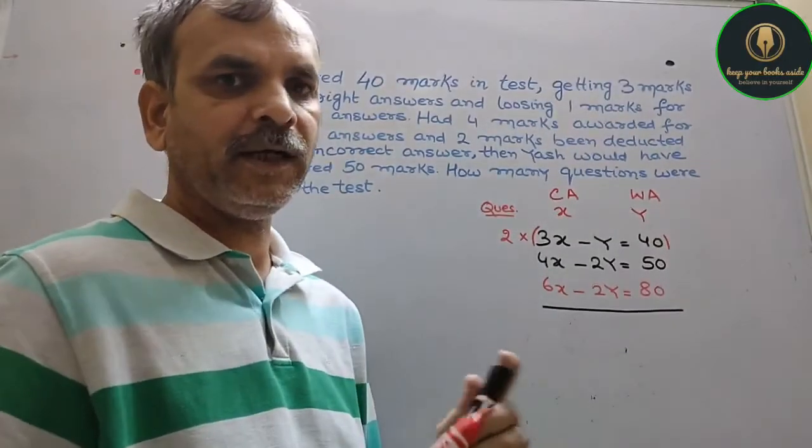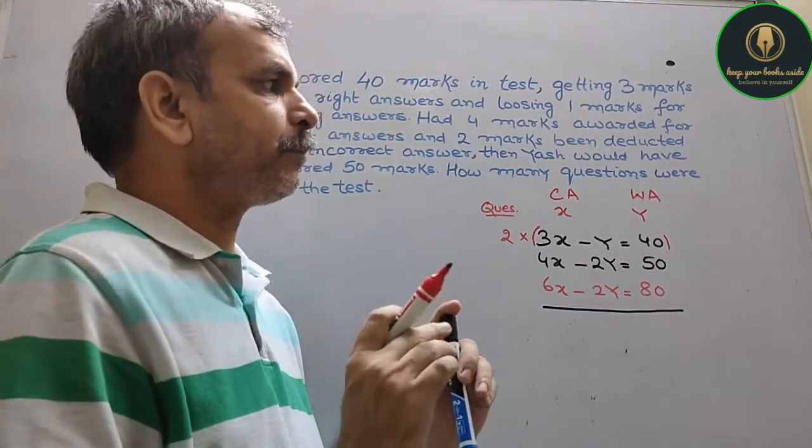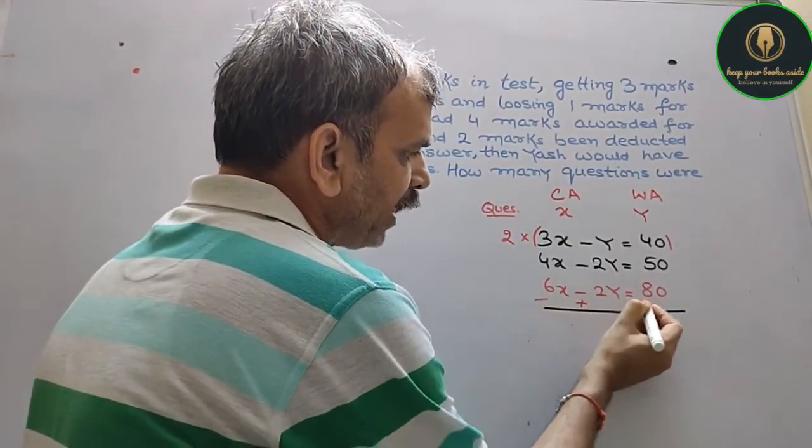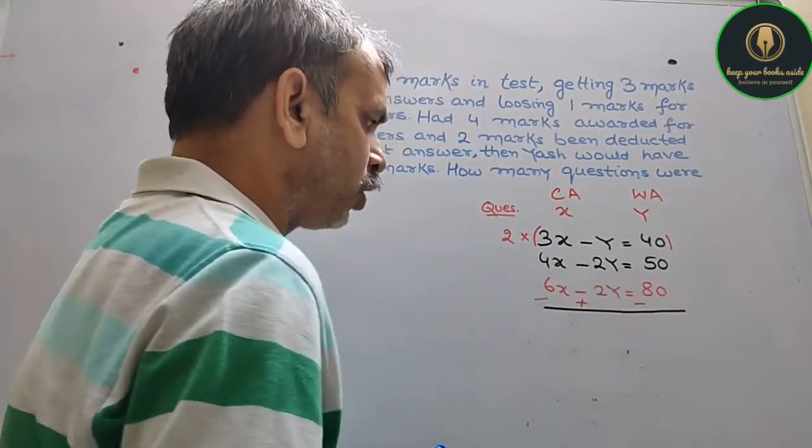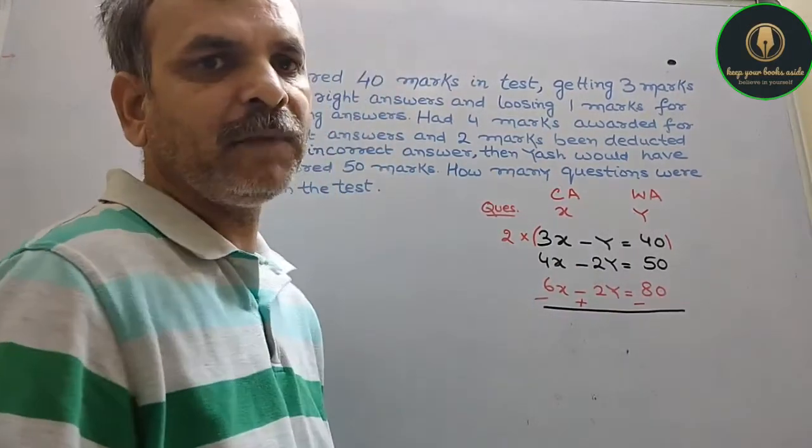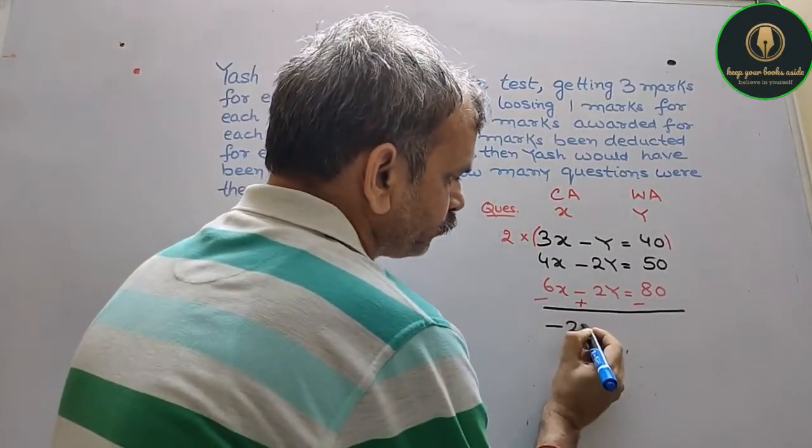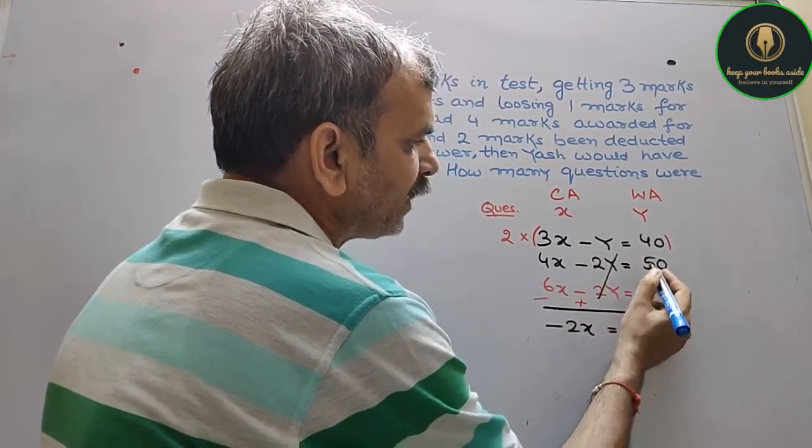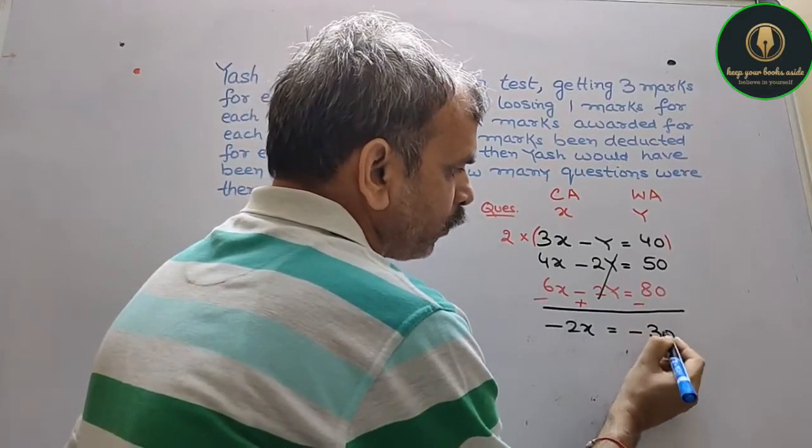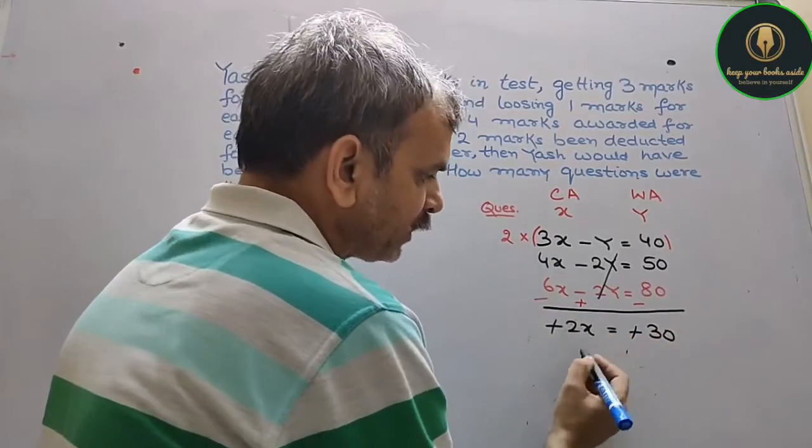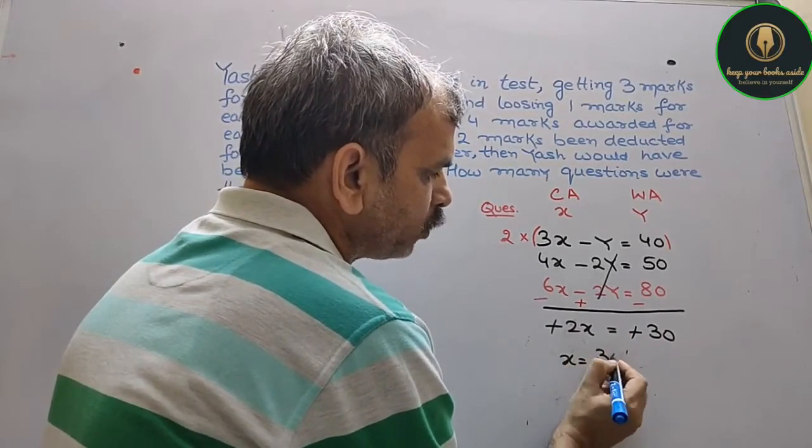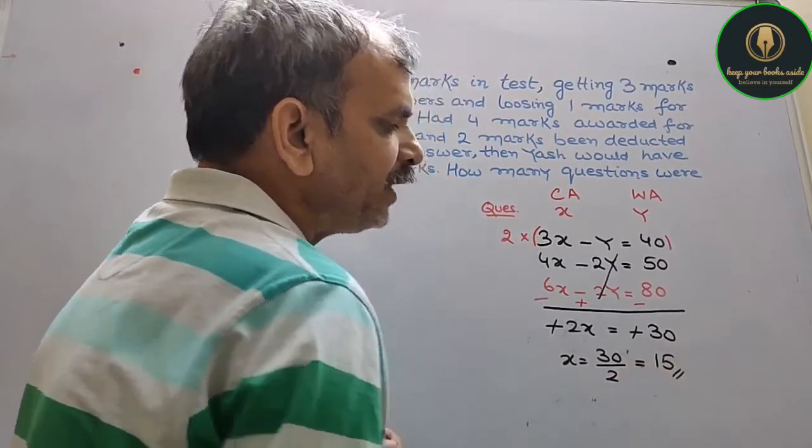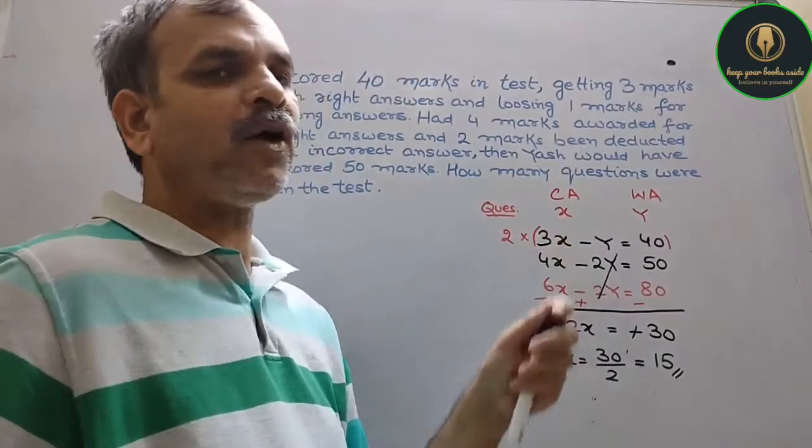We will subtract. When we subtract, the signs will get changed. So minus minus becomes plus and plus becomes minus. Now 4X minus 6X is minus 2X. Minus 2Y plus 2Y gets cancelled. That equals minus 80 plus 50 is minus 30. So minus and minus get cancelled, so X equals 30 by 2, that is equal to 15.